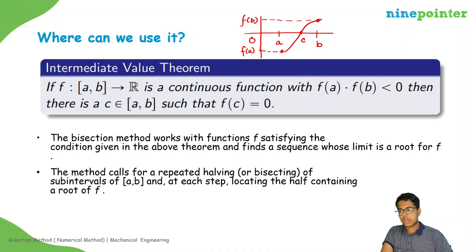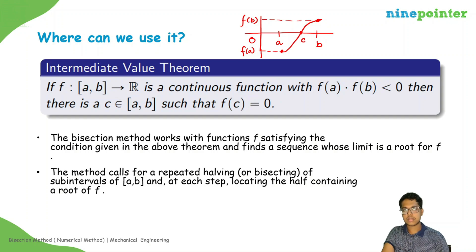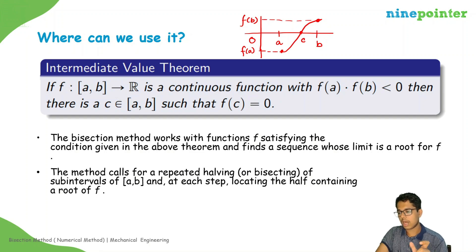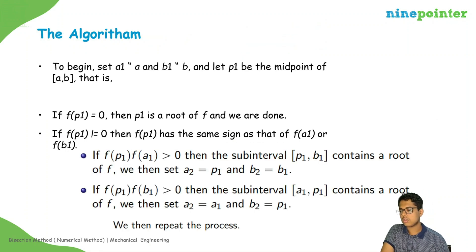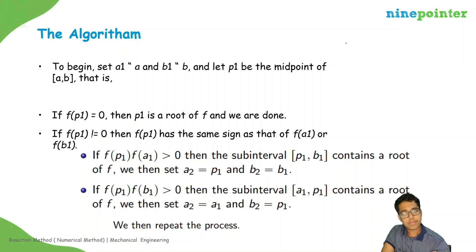What the bisection method does is it keeps on approximating by taking new values of a and b. It continuously halves the sub-intervals where we are looking for the root and then locates the half containing the root. How we start is we set a₁ as a, so basically we have iterations a₁ and b₁.